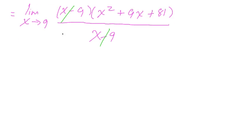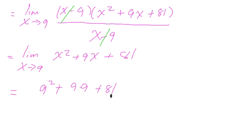And finally do the direct substitution. However we are going to rewrite this one more time. And we have x squared plus 9x plus 81. Now we go ahead and do the direct substitution. So we have 9 squared plus 9 times 9 plus 81.